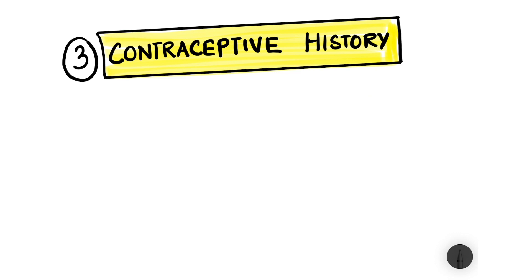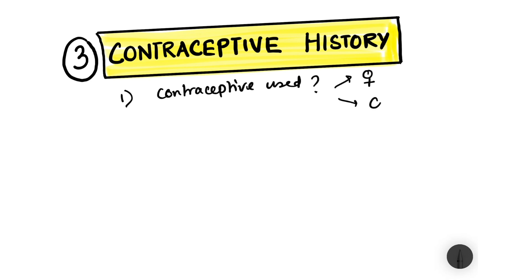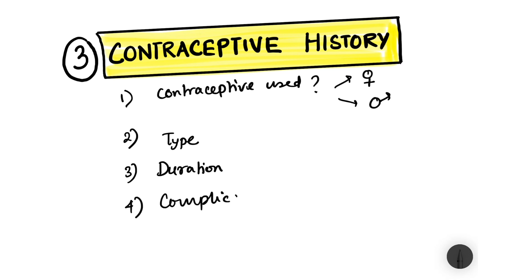Finally, we come to the contraceptive history. First, you ask whether any contraceptive was used — and whether it was used by the female or the male partner. Then you determine the type of contraceptive, the duration of use, whether there were any complications related to that contraceptive, and whether the contraceptive was advised by a doctor.